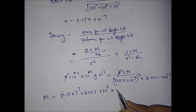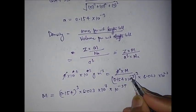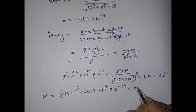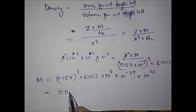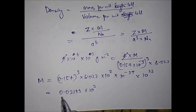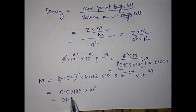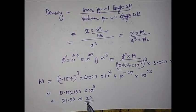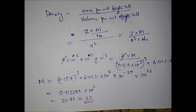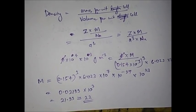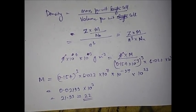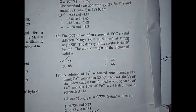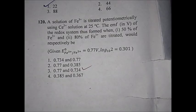After solving, M comes out to be approximately 0.02199×10³ = 21.99 ≈ 22 g/mol. So the atomic weight of the elemental solid is 22 grams per mole, and the correct option is option number one.